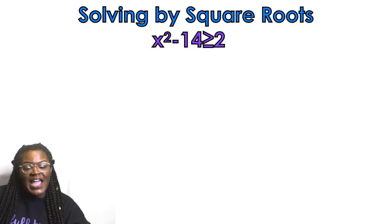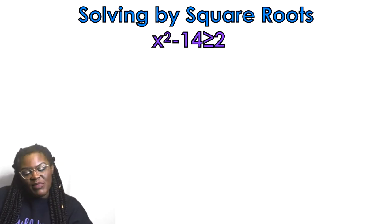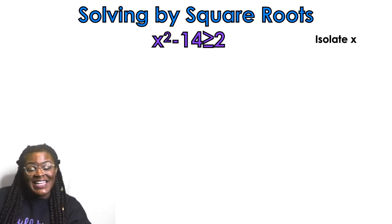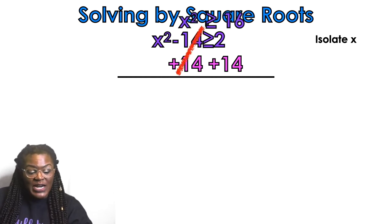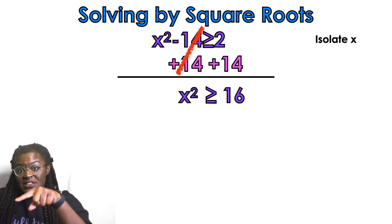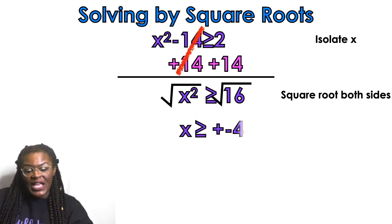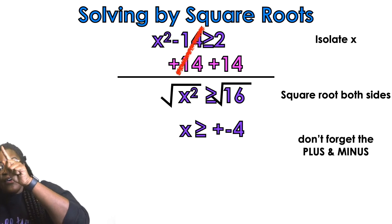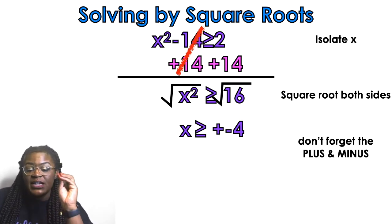Solving by square root: if I have a quadratic that does not have a linear term — linear being not an x-squared, not a constant, but just an x — then I can solve by square roots. The first thing you want to do is isolate x. We're going to subtract 14 from both sides, getting x squared is greater than or equal to 16. To get x by itself, I square root both sides, so x is greater than or equal to plus or minus 4. Don't forget your plus or minus — it is very important that when you take the square root of both sides, you always get a plus or minus.